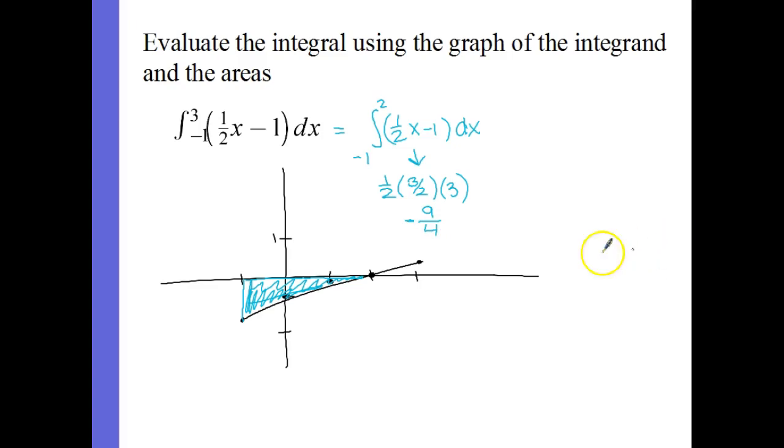Then we're going to add to it this little triangle here, which is from 2 to 3. So that's 1 half, base is 1, height is 1 half. So a half times a half is a fourth. You add the two total areas together, and the integral would equal negative 9 fourths plus 1 fourth, which is negative 8 fourths, which is negative 2.